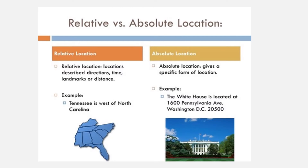Let's start with absolute and relative location — two different ways we think spatially. Relative location is like giving someone directions to your house by saying it's across the street from the Loaf 'N Jug. Absolute location is giving them your specific address, or if you're really nerdy, your longitude and latitude coordinates.